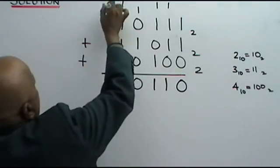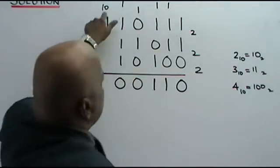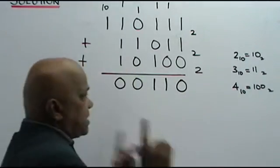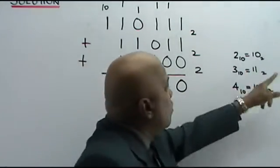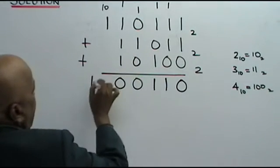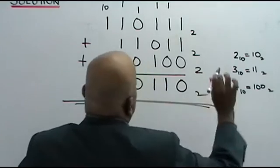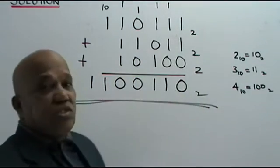0 is 2. 2 plus 1 is 3. How do you write 3? 11. This is your answer in base 2.